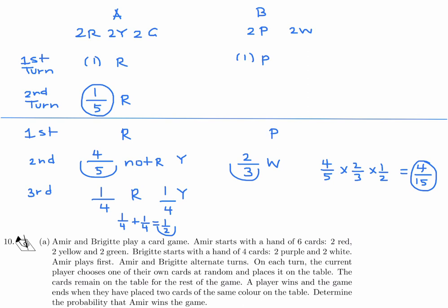The probability Amir wins on the second turn is 1/5, and on the third turn is 4/15. Adding these: 1/5 + 4/15 = 3/15 + 4/15 = 7/15. The probability that Amir wins the game is 7/15.